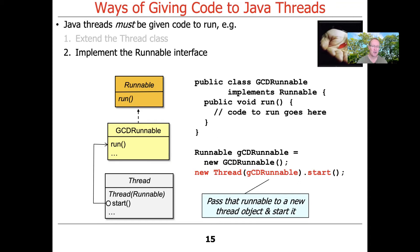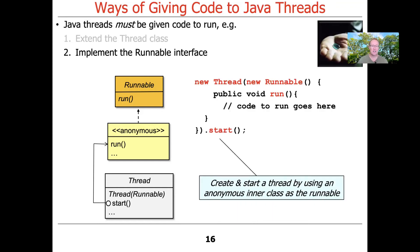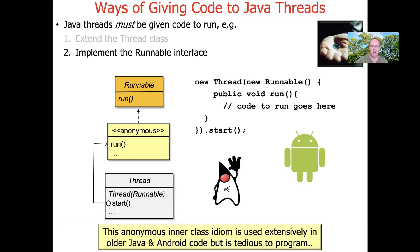On the left-hand side you can see the UML diagram corresponding to this, where GCDRunnable implements the run method of the Runnable functional interface, and we pass that to the Thread constructor. When we call start, the wheels begin to spin. Another alternative uses an anonymous inner class: we say 'new Thread(new Runnable() { public void run() { ... } }).start()'. This approach was historically popular but has fallen into disrepute with modern Java features.